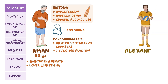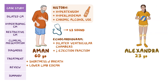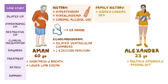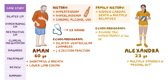Alexandra is a 23-year-old professional volleyball player who came into the clinic after multiple episodes of passing out during her games. At first, she presumed it was due to dehydration, but she's now concerned. She has a family history of sudden cardiac death in multiple relatives. An echocardiogram shows asymmetric hypertrophy of the intraventricular septum and a normal ejection fraction.